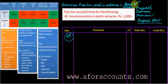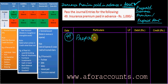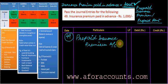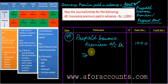This is a very important point. If an asset increases, we have to debit it. Prepaid insurance premium is an asset, so we debit the Prepaid Insurance Premium account by rupees 1000. We credit Insurance Premium because we will not have to pay it again in the coming time.